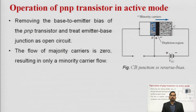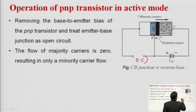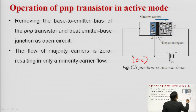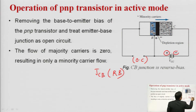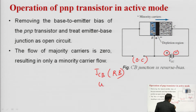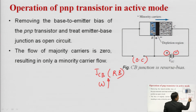Now considering the collector-base junction with the emitter-base junction open: the collector-base junction is reverse biased — the positive of the battery is connected to the N-type and the negative to the P-type. As a result, during reverse bias the width of the depletion region increases, and the positive terminal pressurizes the holes in the N region.